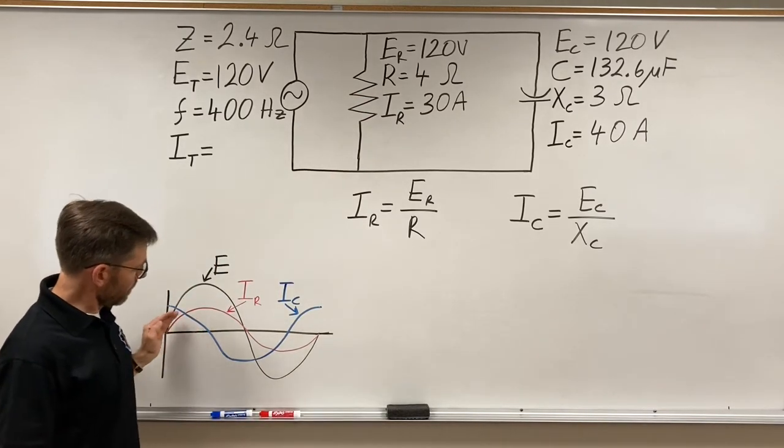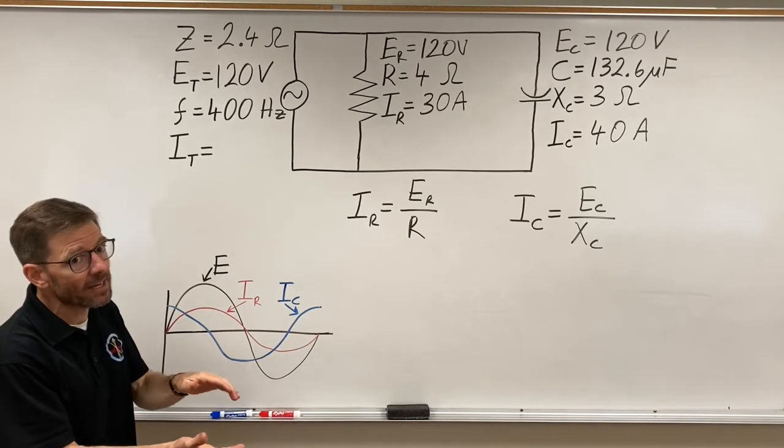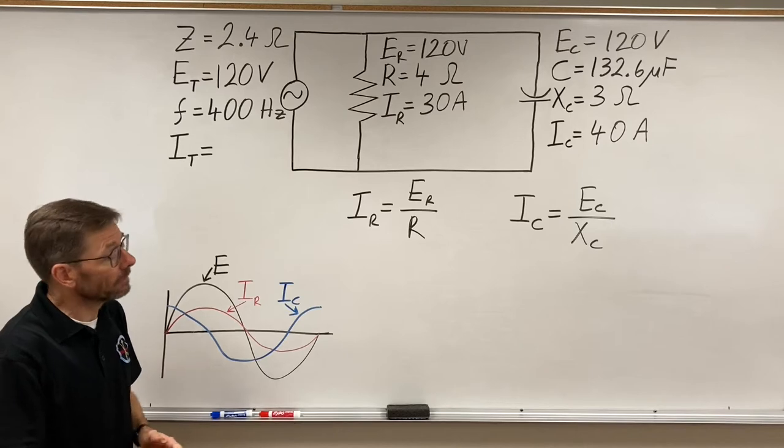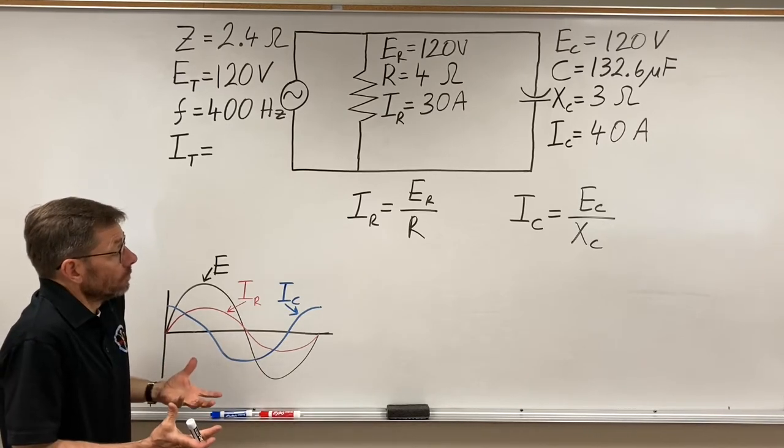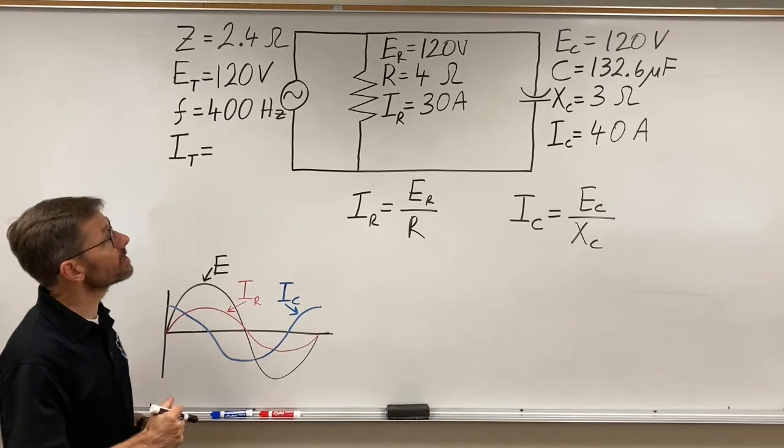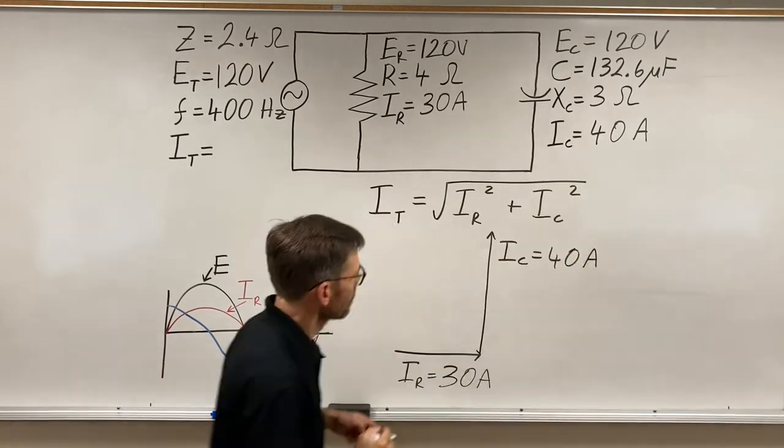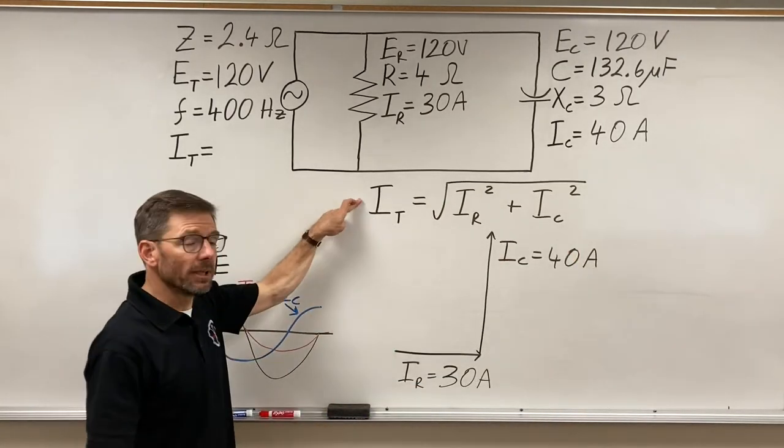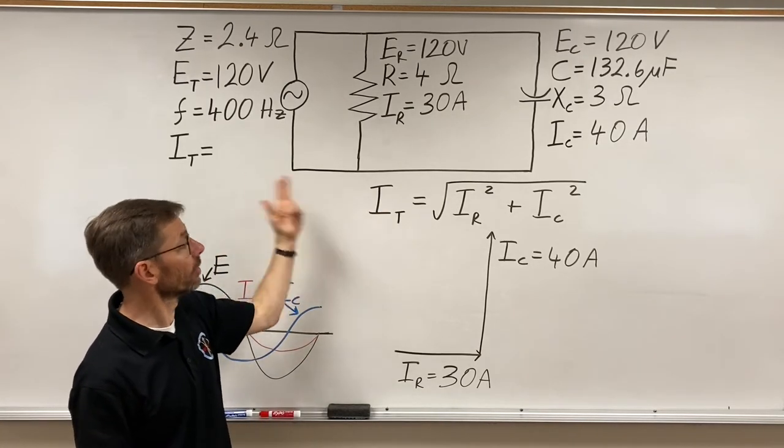Now, those amps are not in phase with each other, so they don't just add arithmetically. So what we do is we vector them 90 degrees apart. So I drew the formula, which is Pythagorean theorem, and that'll yield our total current.